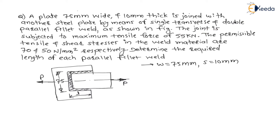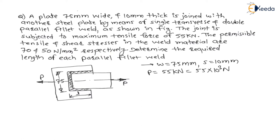The joint is subjected to a maximum tensile force of 55 kN. Both parallel plus one transverse weld together can take a maximum tensile load of 55 kN, which is 55 × 10³ N. The permissible tensile and shear stresses in the weld material are 70 and 50 N/mm² respectively.